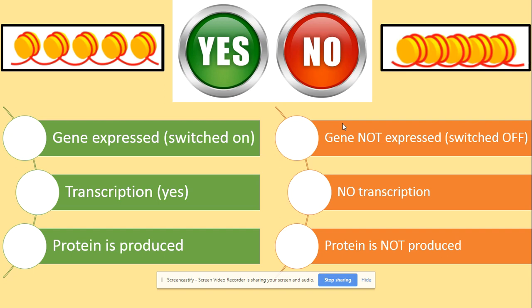When a gene is expressed — switched on — it is available for protein synthesis, so transcription and translation can take place and we produce our protein. When the gene is not expressed — switched off — the DNA is wrapped tightly around the histones, so transcription cannot take place and no proteins are produced.